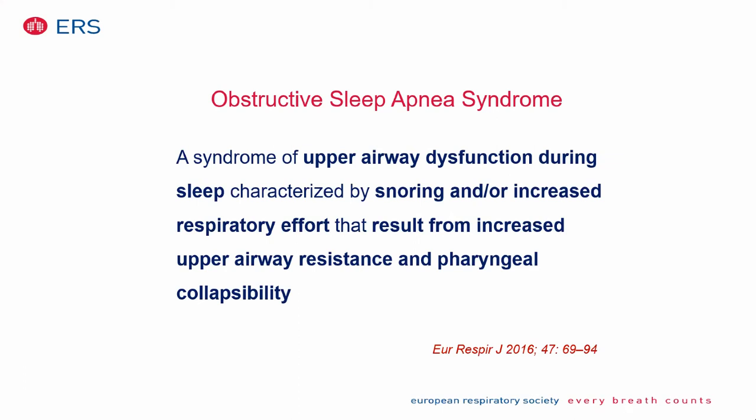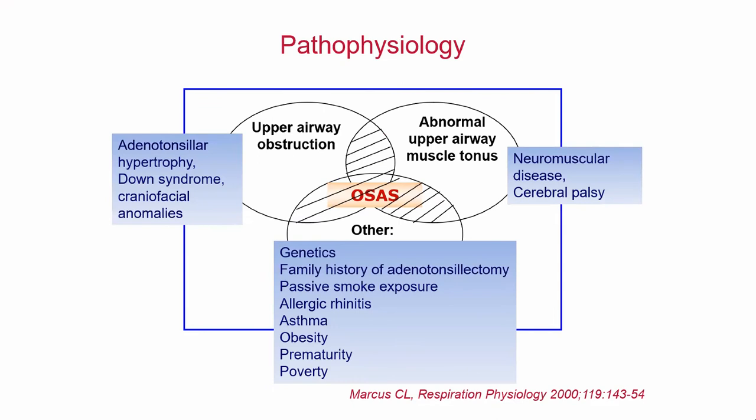Obstructive sleep apnea is a syndrome of upper airway dysfunction during sleep, characterized by snoring and/or increased respiratory effort, resulting from increased upper airway resistance and pharyngeal collapsibility. This is a rather simplistic definition because now, especially in the adult world, we're talking about phenotypes and endotypes. In children, the main reason for upper airway obstruction is the anatomic narrowing of the upper airway, and in otherwise normal children it's usually by adenotonsillar hypertrophy.